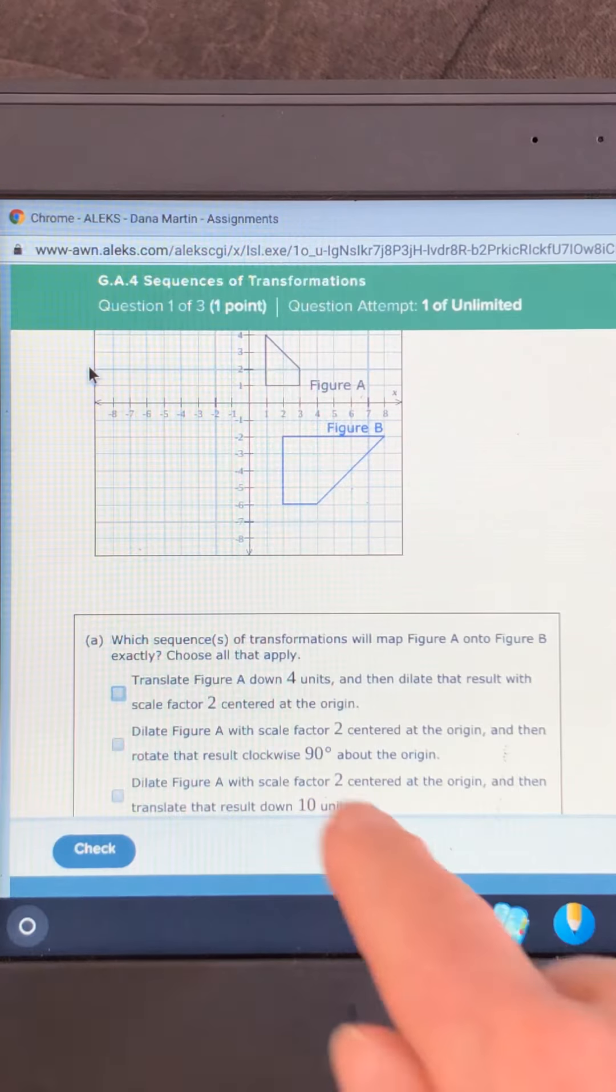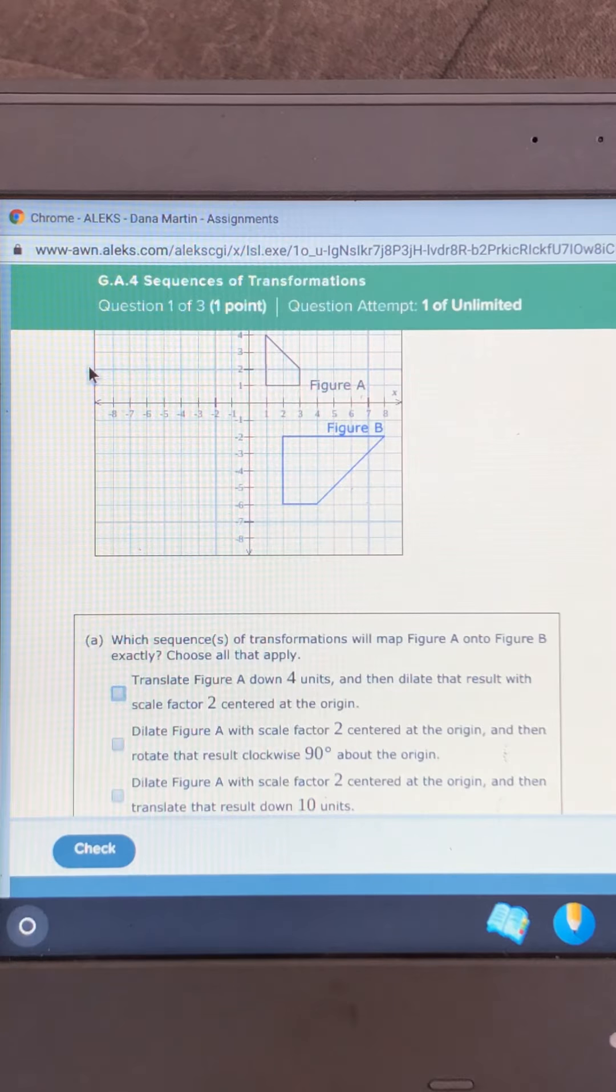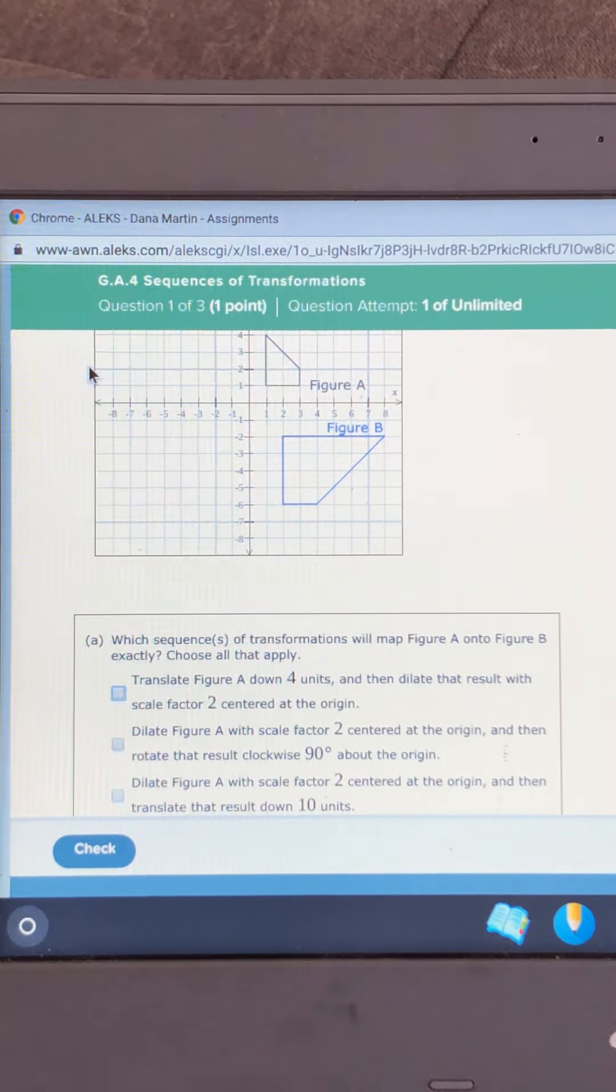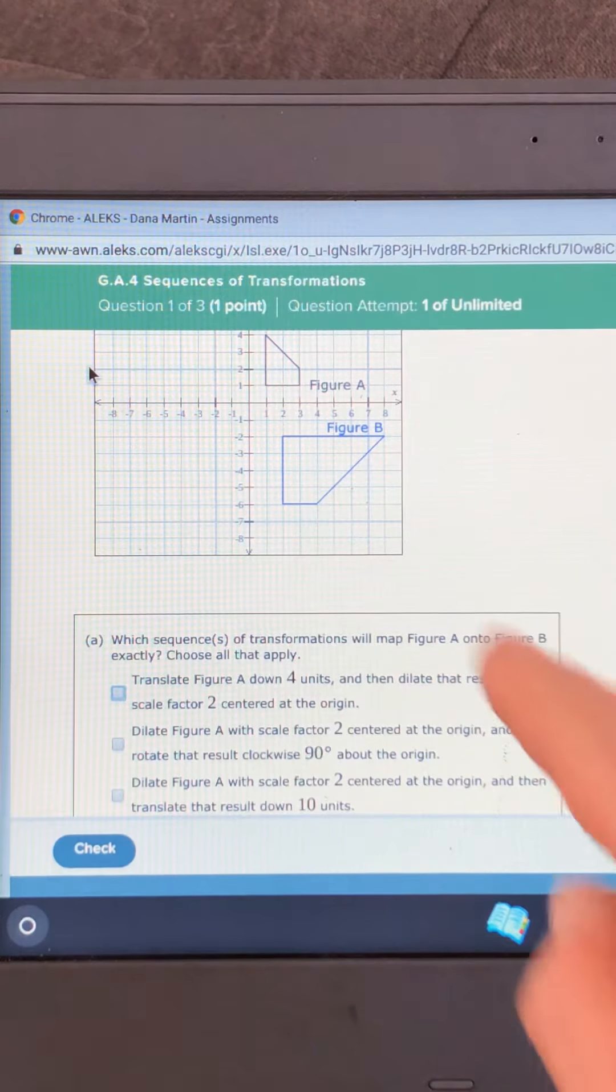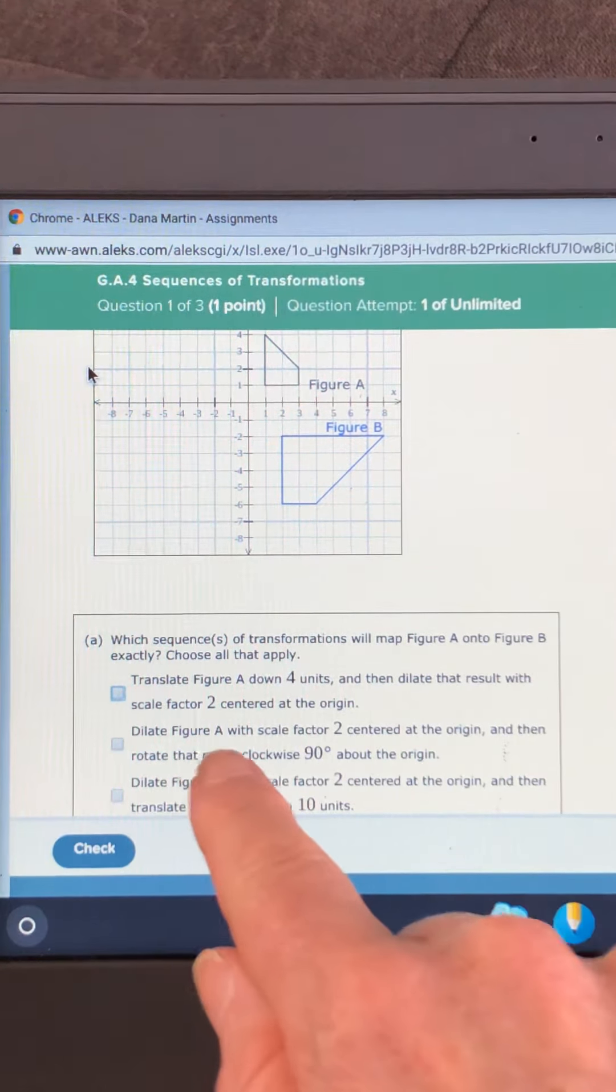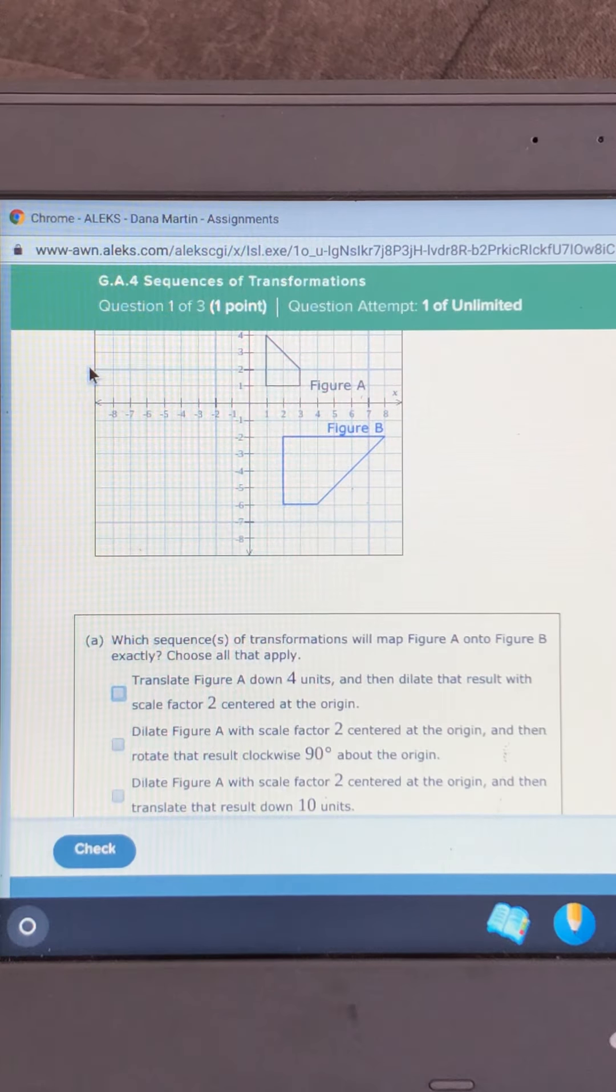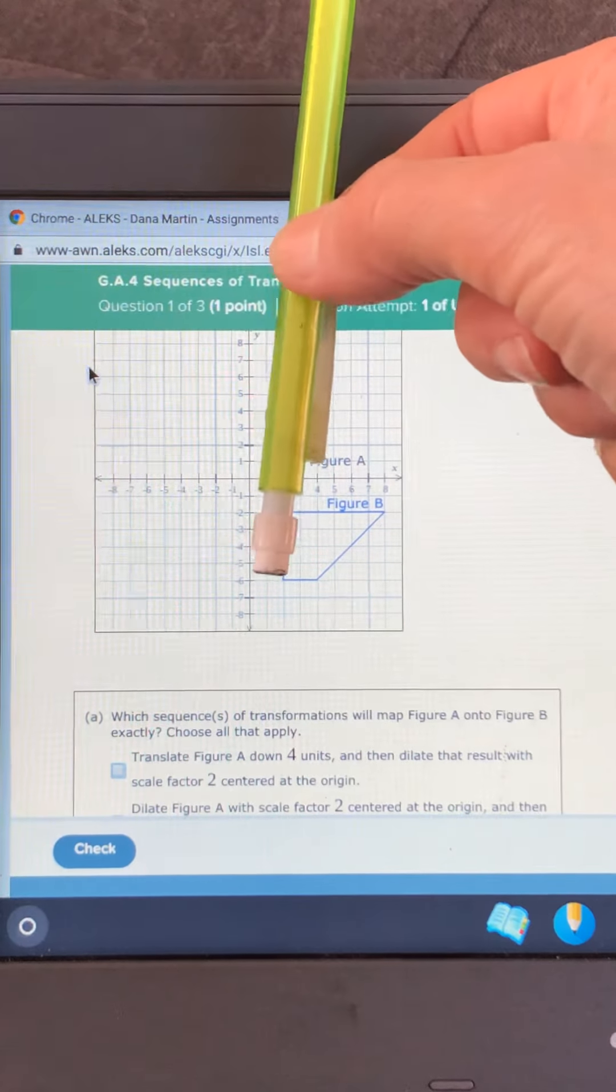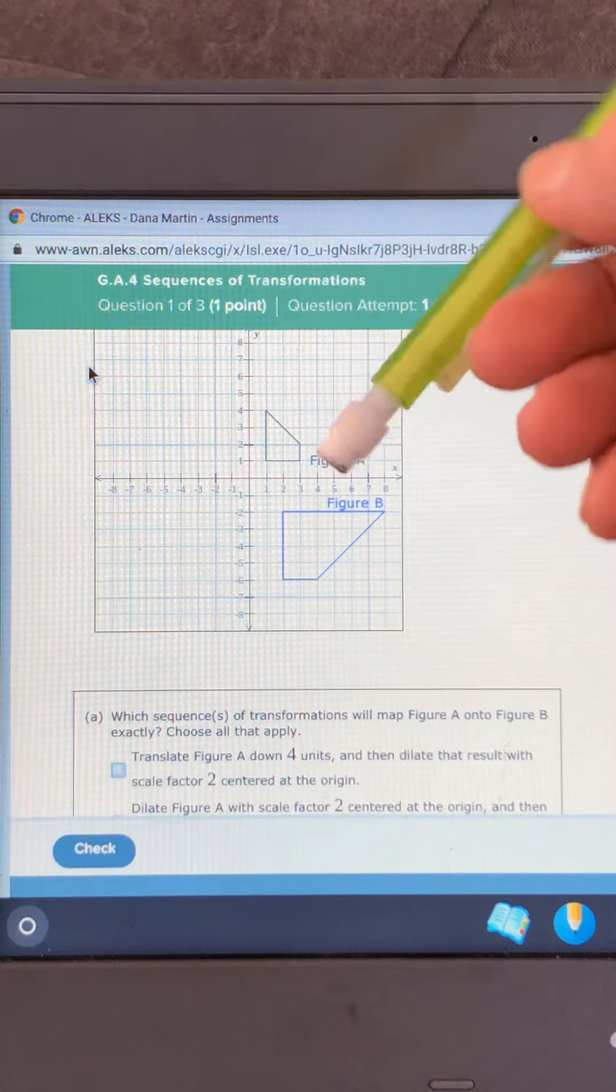The next idea says that it's dilated with a scale factor of two. Yeah, that sounds great because there's a dilation and all of the dilations they use here use two. So that means it's got to be a dilation of two. And then rotated that result clockwise 90 degrees about the origin. So that would mean we're in figure A and we dilate it, make it big, and then we turn it.